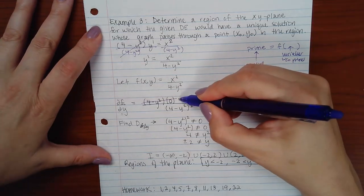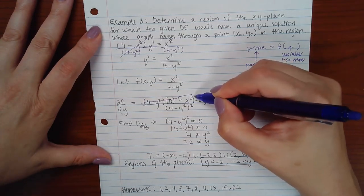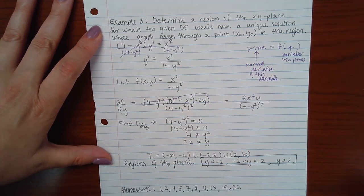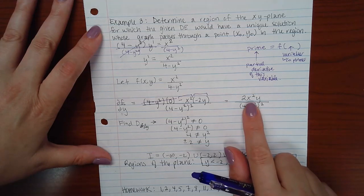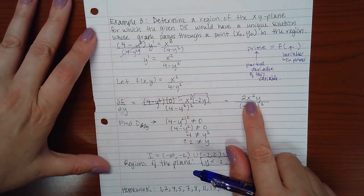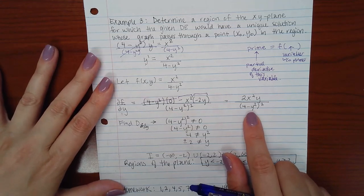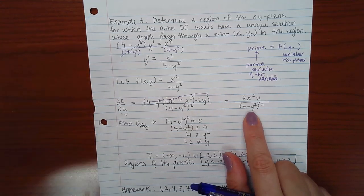And when I distribute or multiply negative x squared and negative 2Y, I end up with a positive 2x squared Y. And in the bottom, there's nothing to compute. It just stays this way.